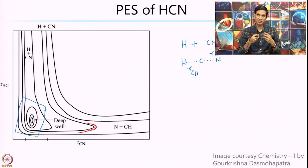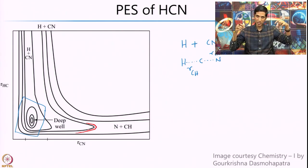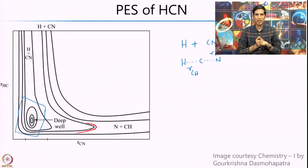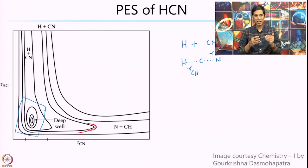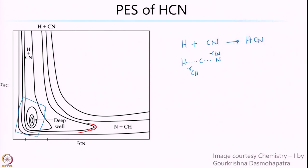This is just because of the inherent stability of the C triple bond N compared to the CH bond which is going to form. Thus when these two actually come together, they undergo covalent bond formation and end up in formation of the product. This is in complete contrast with the H3 system where you had a top of a hill or a saddle point when you brought the A to the BC system.